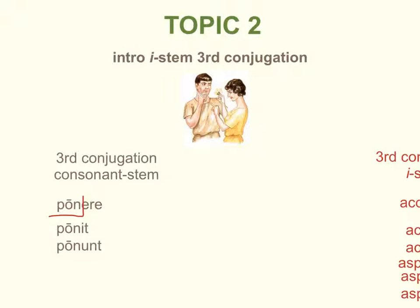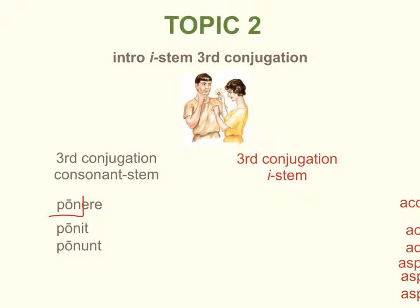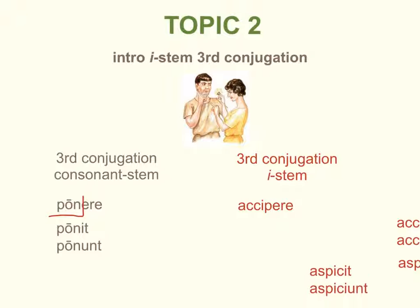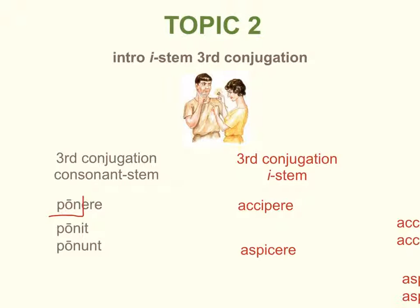Now we're being introduced to the third conjugation i-stem verb. We have two examples in this chapter: accipere and aspicere. The third person singular is familiar — accipit and aspikit — but the third person plural ends in -iunt rather than -unt: accipiunt and aspiiciunt. We'll see more of these in chapter 12 and fully conjugated forms in chapter 15.